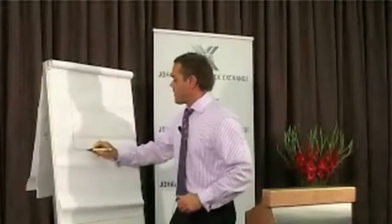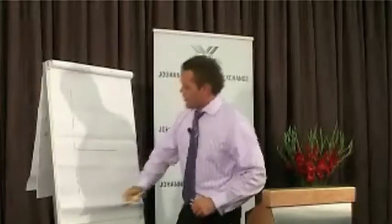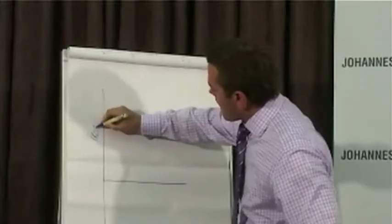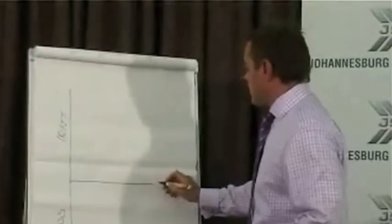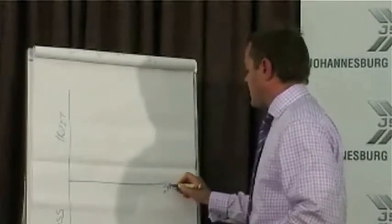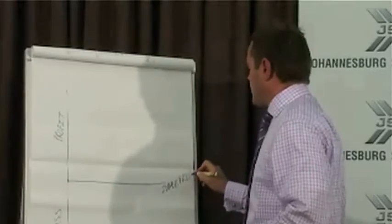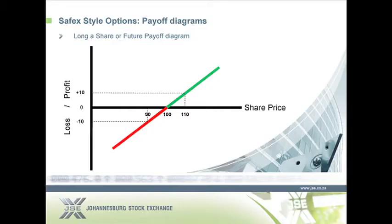We also work with pay-off diagrams, and we will explain pay-off diagrams and trading strategies at a later stage. But I will lay the basis for pay-off diagrams when we're working with options. The easiest way to explain a pay-off diagram is first just looking at a normal share — owning a normal share or being long a future. If we draw on the board, you would have a diagram with profit on the y-axis at the top, loss on the y-axis at the bottom, and the share price on the x-axis. There would be a diagonal line representing your long share or your long future.